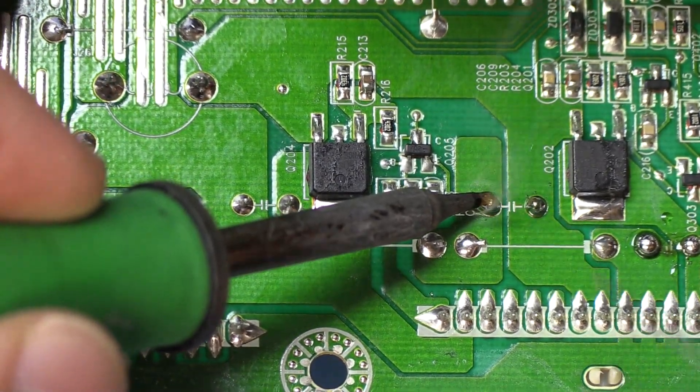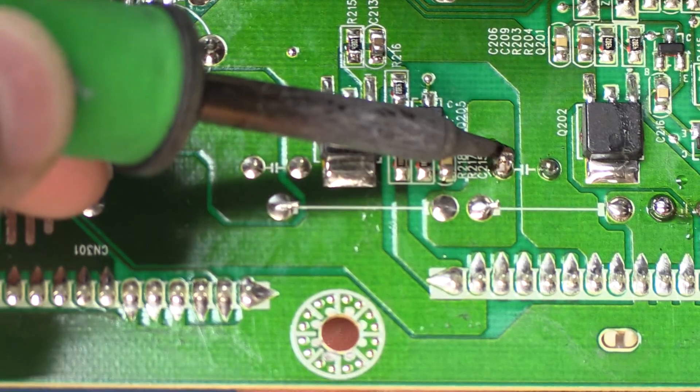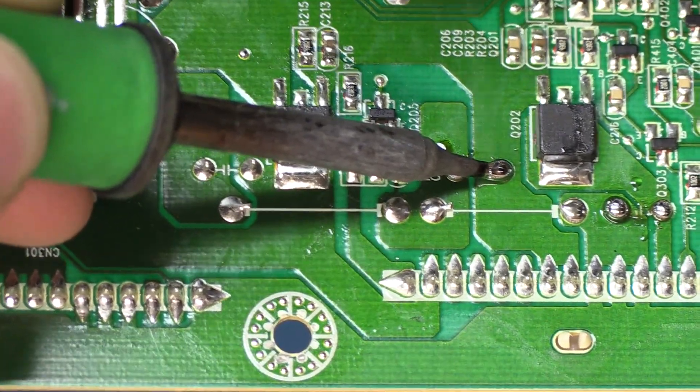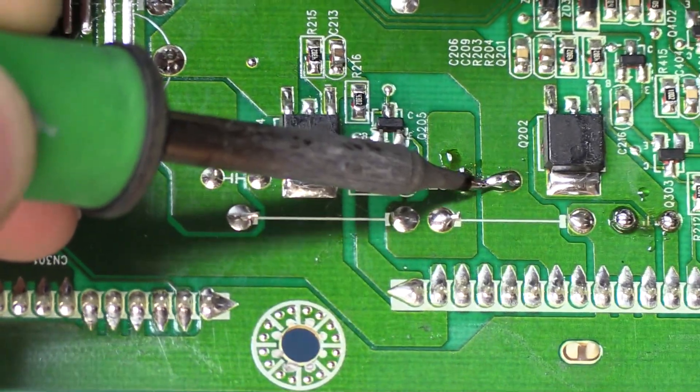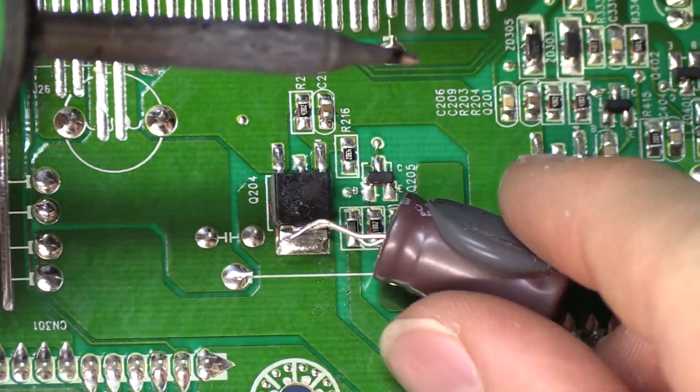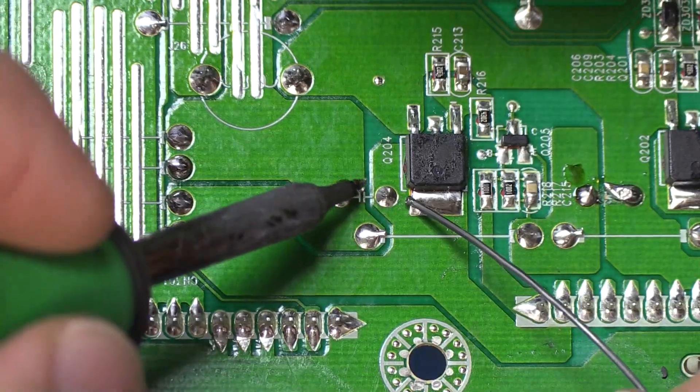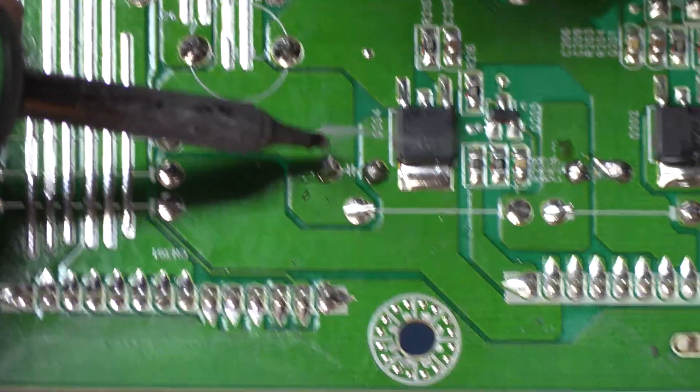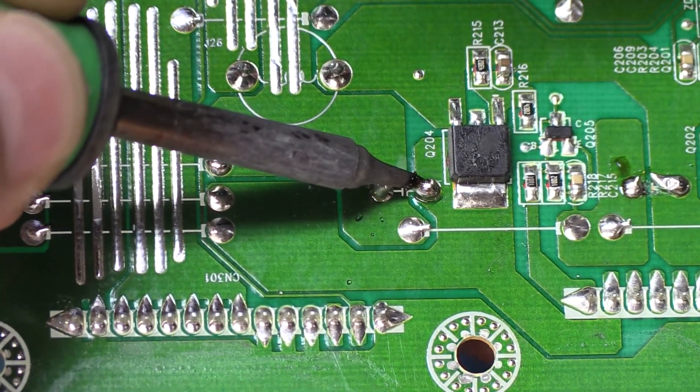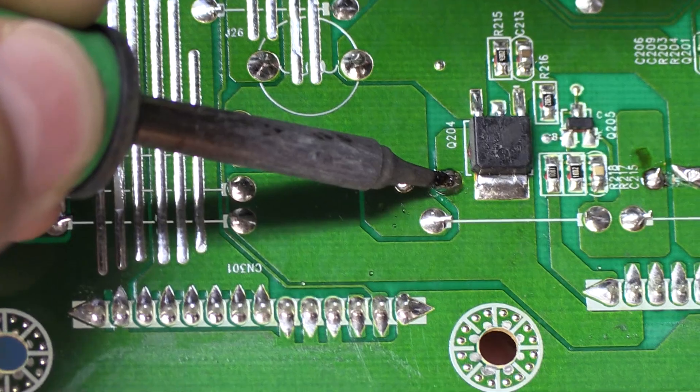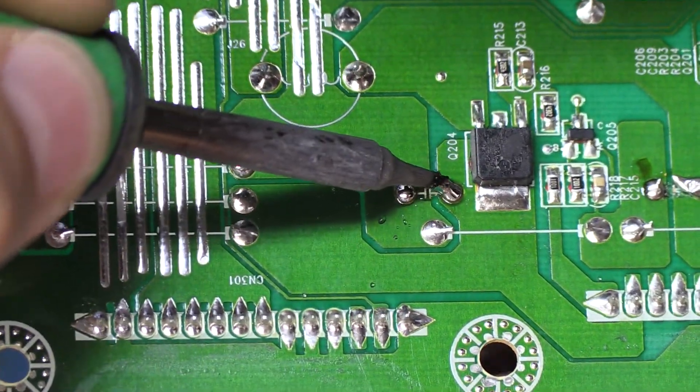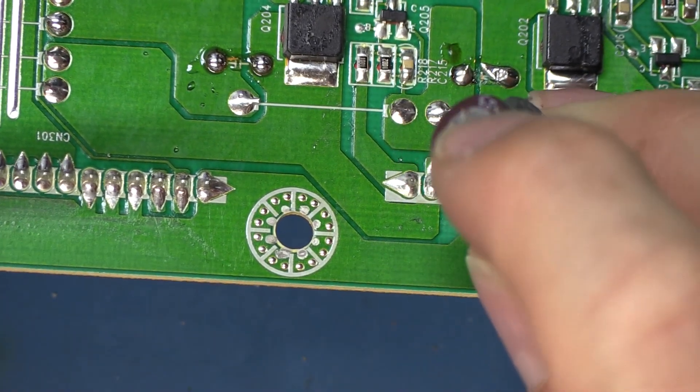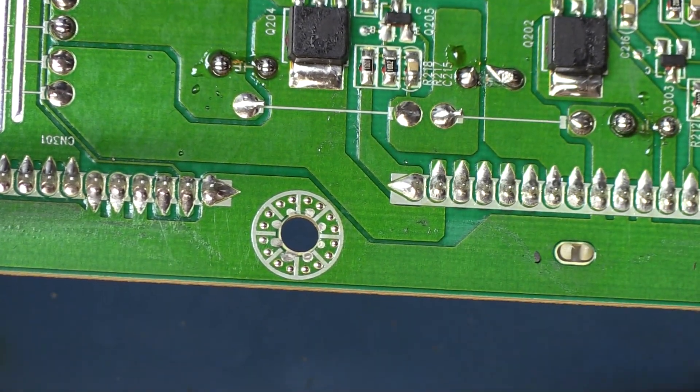Same thing. Add a little solder first. There we go. That's our second one. Third one over here. Now these first three are the ones that were visually looking okay. So we're going to put those to the side.